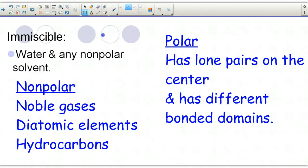Immiscible is going to be if you have polar plus non-polar, then that's not going to work. Polar solvents will not dissolve in non-polar solvents. Remember examples of non-polar? It could be any noble gas, diatomic elements, and more importantly for us, hydrocarbons.